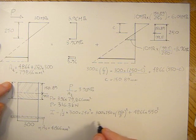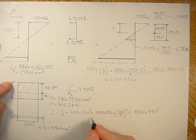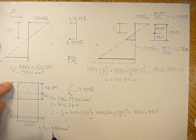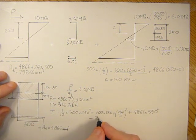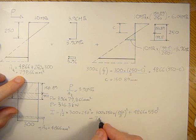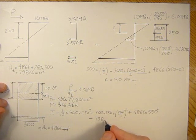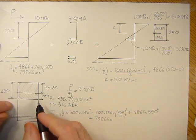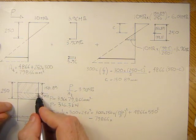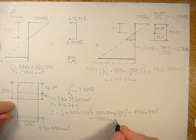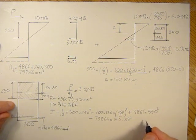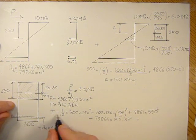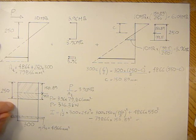Minus - this is where the parallel axis theorem comes in - minus the total area 79,866 times the distance from this neutral axis to that neutral axis, 150.89 squared.